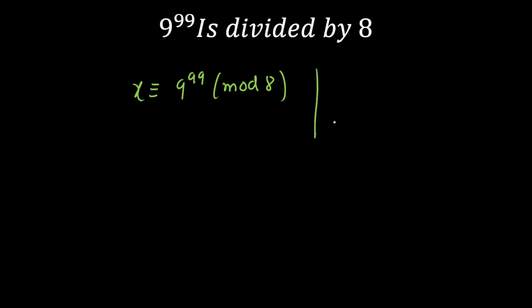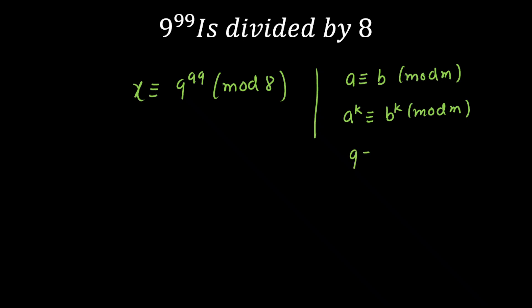I'm going to use the fifth property here. Previously I told you, if a is congruent to b modulo m, that means if I divide a by m the remainder will be b. Then I can write this as a raised to the power k will be congruent to b raised to the power k, modulo m, where k is greater than or equal to 1. Using this, I'm going to write 9 is congruent to 1 modulo 8, because when we divide 9 by 8, the remainder will always be 1. So I can say 9 raised to the power 99 will be congruent to 1 raised to the power 99, modulo 8.